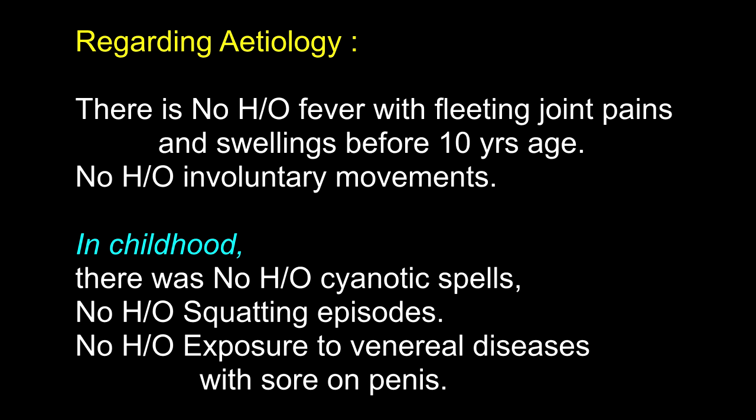The mechanism of cyanotic spells: infundibular spasm of the right ventricle reduces blood going into the pulmonary circulation, which is already compromised. It also increases the right-to-left shunt, leading to arterial hypoxia and central cyanosis with metabolic acidosis manifesting as tachypnea. Common conditions causing continuous central cyanosis: Tetralogy of Fallot, Eisenmenger's syndrome with ASD, VSD or PDA, and transposition of great vessels.